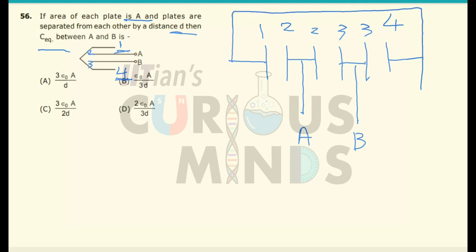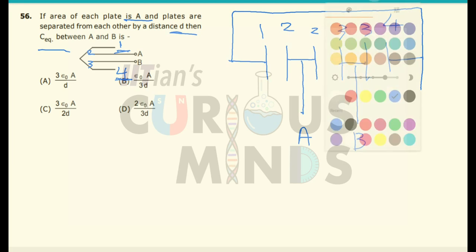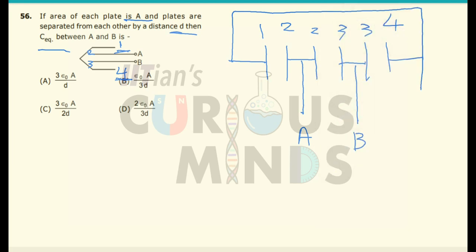So this is the whole circuit diagram. The separation between first and second, second and third, and third and fourth is the same, and the area of all the plates is the same. So if I find the capacitance of any one pair, say between the first and second plate, it will be equal to Aε₀ divided by D. This is the same between the second and third plate and between the third and fourth plate.